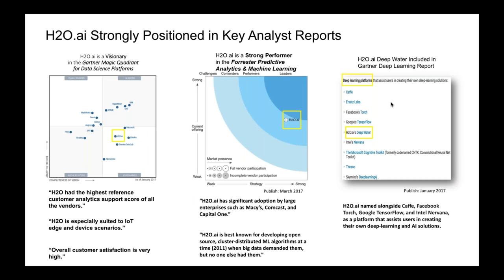H2O is recognized in key analyst reports. We are placed in the Gartner Magic Quadrant for data science platforms as a visionary — very close to Microsoft in the same quadrant. We were also mentioned in the Forrester Wave as a strong performer. H2O is frequently included in deep learning reports as one of the key players.